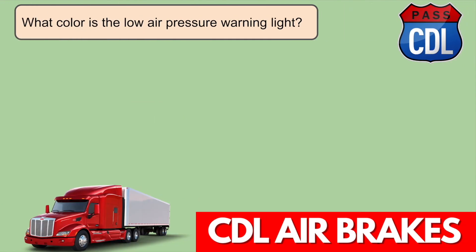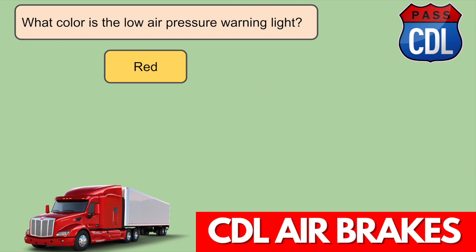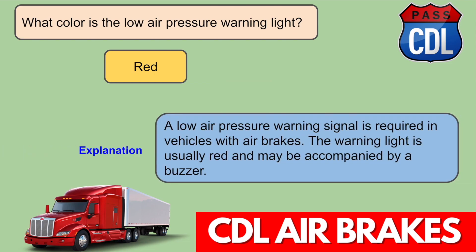What color is the low air pressure warning light? Red. A low air pressure warning signal is required in vehicles with air brakes. The warning light is usually red and may be accompanied by a buzzer.